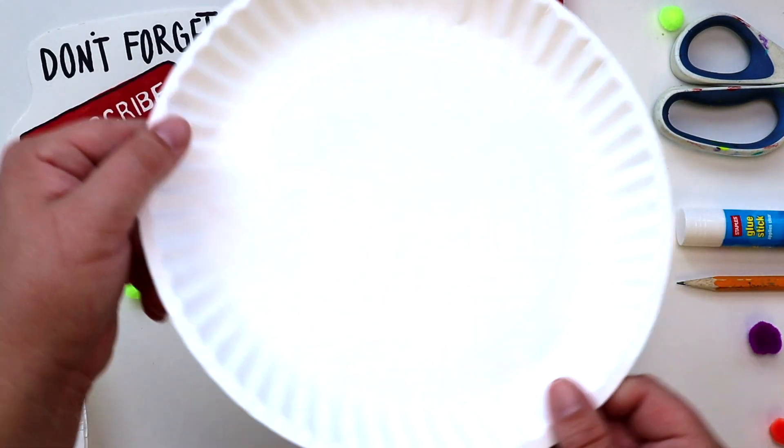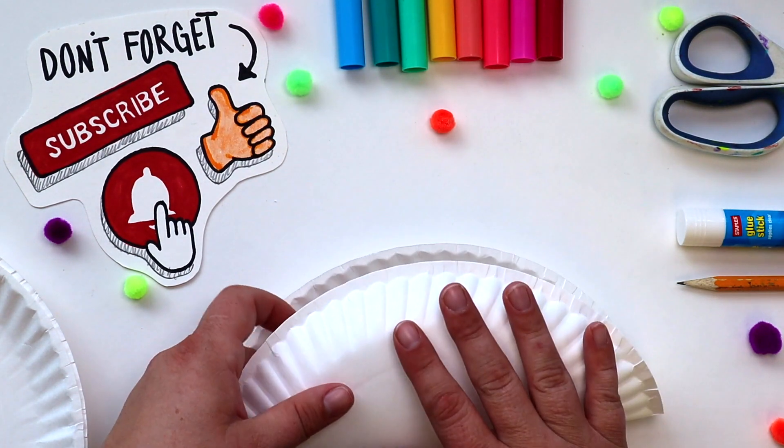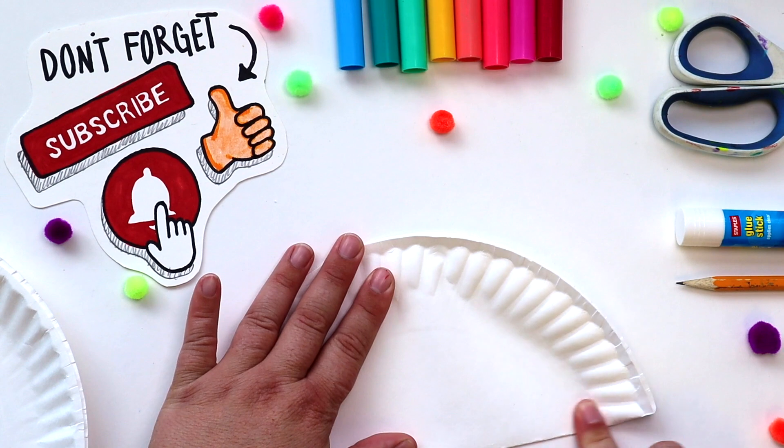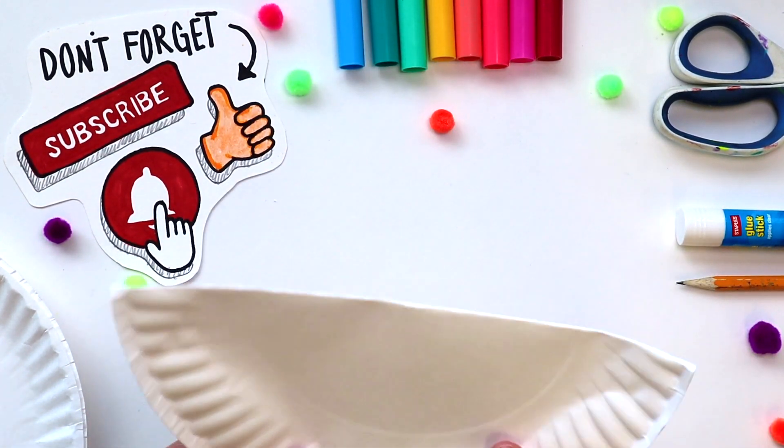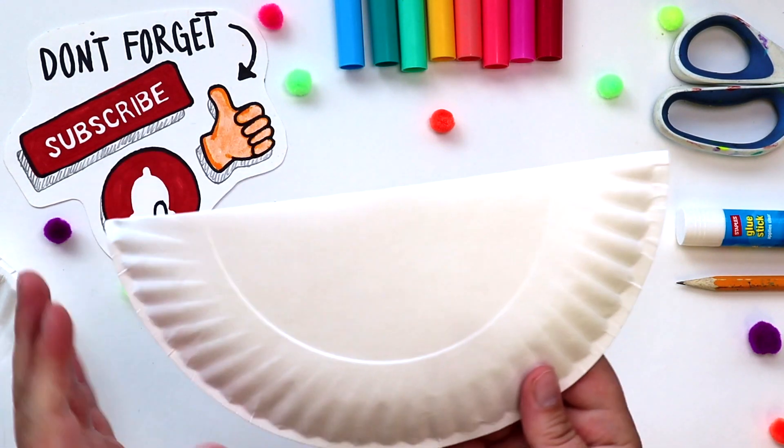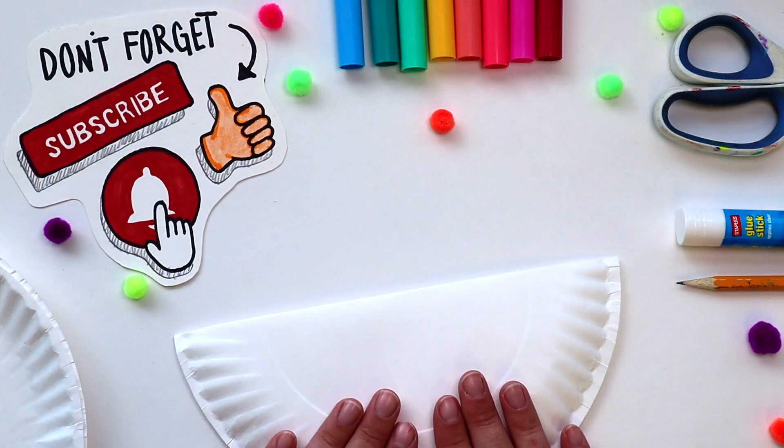Okay, let's get out our first plate. We're going to fold it right in half. Great, now what I'd like you to do is rub the two edges of the paper plate together. You're going to see it's going to start to turn inward, but that's exactly what we're looking for. This is now the body of our llama.